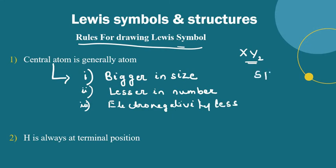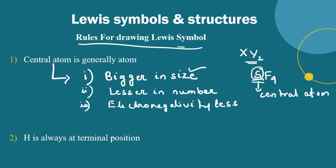For example, take the molecule SF4. We have sulfur and four fluorine atoms. As we go down a group, atomic size increases, so sulfur is larger. Sulfur is also lesser in number, and sulfur has lower electronegativity compared to fluorine. So sulfur is our central atom.